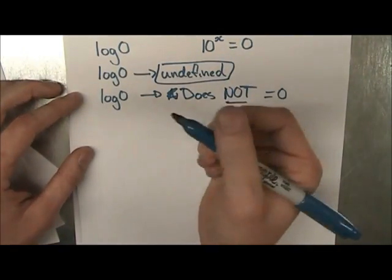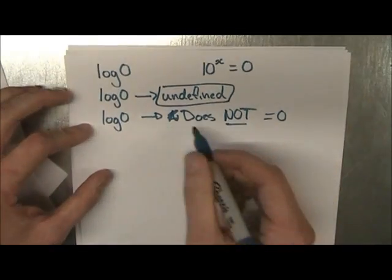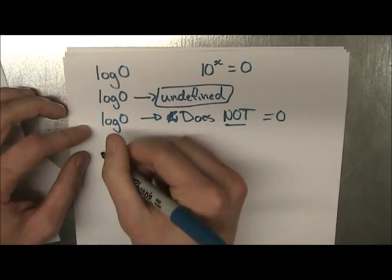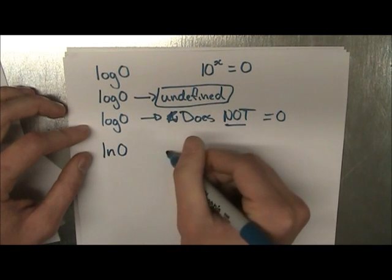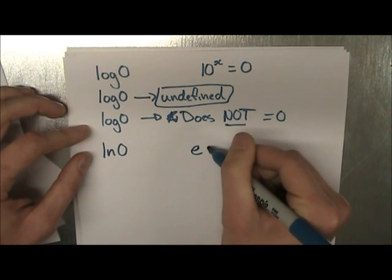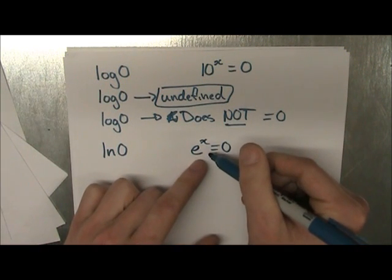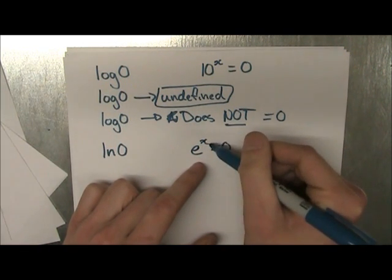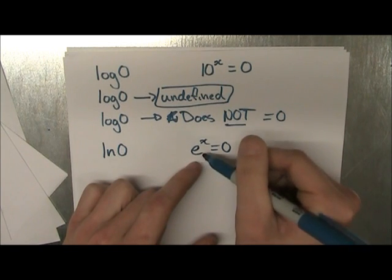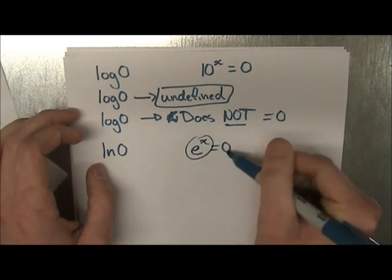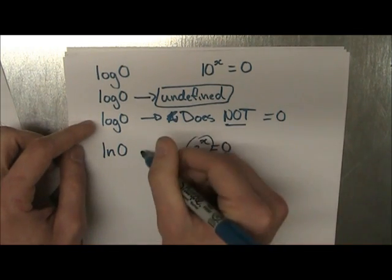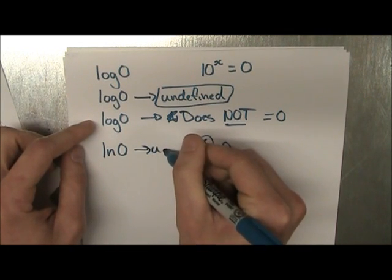Now, let's do negative numbers. And just a note, this is for any log. You could have ln of 0, and it gives us the same thing, because it's going to be e to the x is equal to 0. e is just a number. And there is no power that will make this equal to 0. So still, undefined.